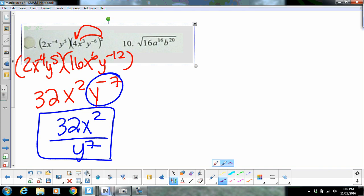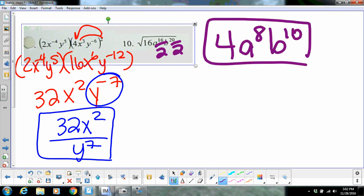And number 10 is a radical problem. Square root of 16 is going to be 4, and we divide our exponents by 2. So A8 and B10. So there's not much left for you to do on your homework for me tonight.